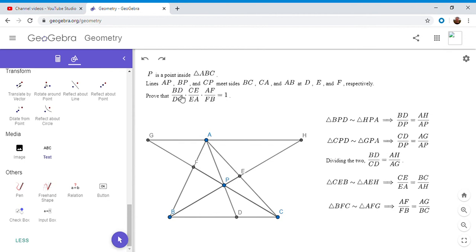We have BD over CD in this equation, and then CE over EA, and AF over FB. So we can multiply these three equations to get this side. But when we multiply the three, everything on the right-hand side cancels, which is pretty cool. So the AH cancels, the BC cancels, and the AG cancels, and we're left with just one.